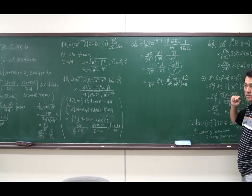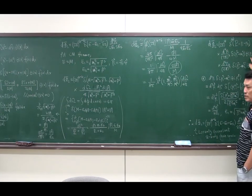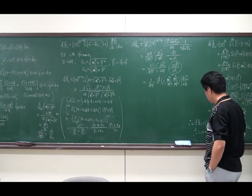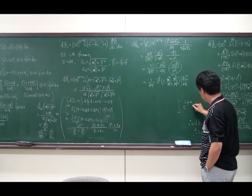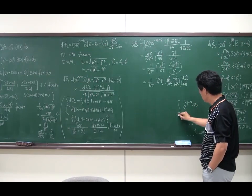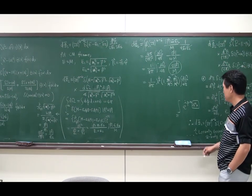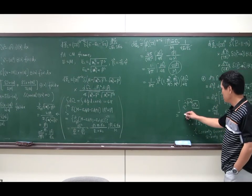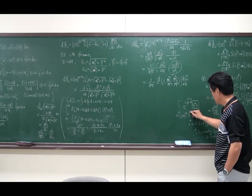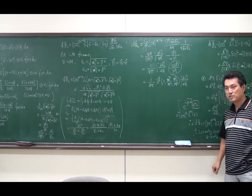There are two theta functions that constrain the energy of each particle to always be positive definite. We learned that this is expressed in terms of a four-dimensional integral whose measure is invariant under Lorentz transformation. The exponential of P dot x is invariant, so this gives (2π) to the fourth power times the four-dimensional delta function of P, and this quantity is invariant under Lorentz transformation.